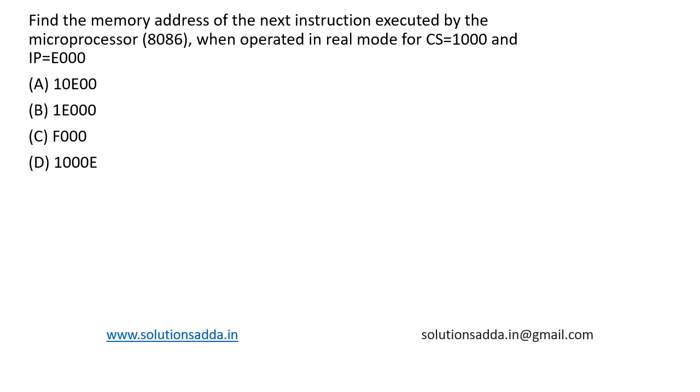This is a question from microprocessor. Find the memory address of the next instruction executed by the microprocessor 8086 when operated in real mode for CS equal to 1000 and IP equal to E000. So it is given that the microprocessor is 8086.